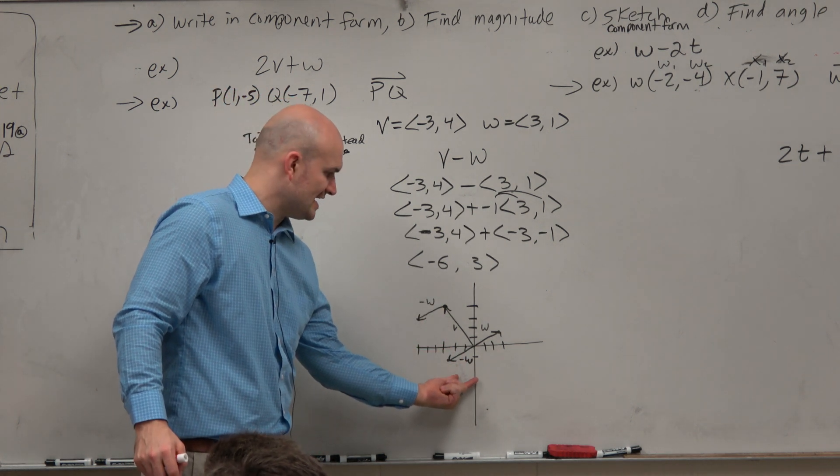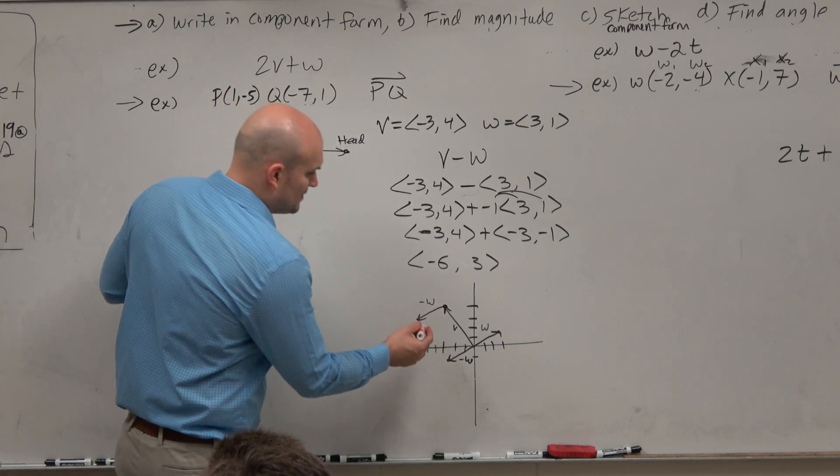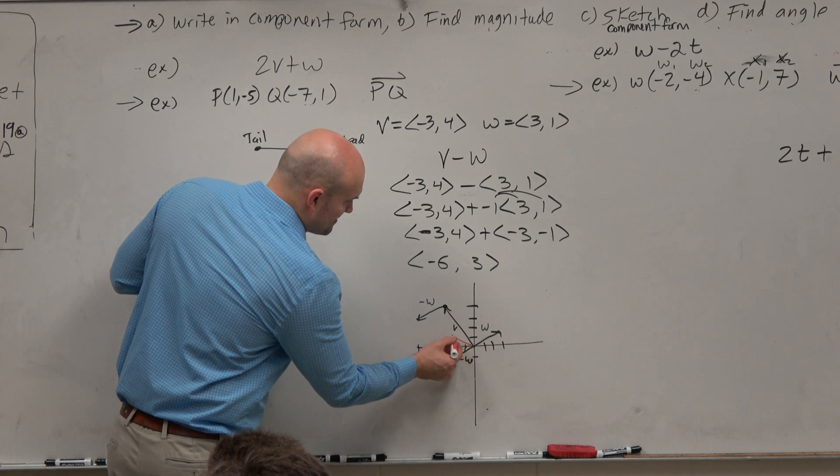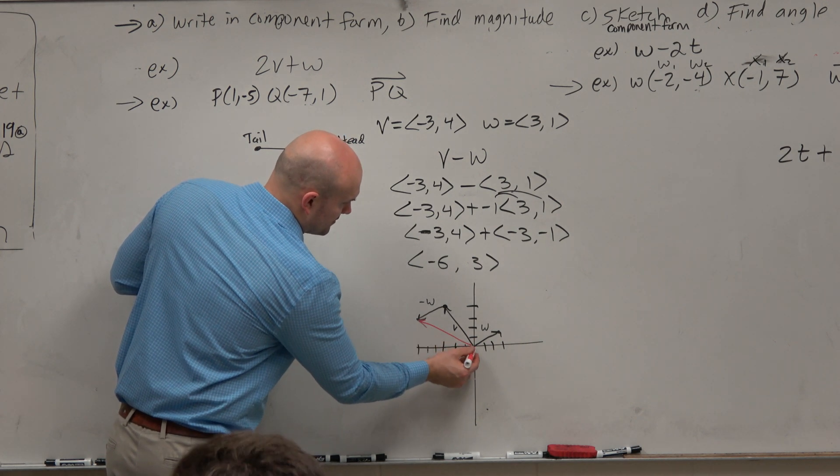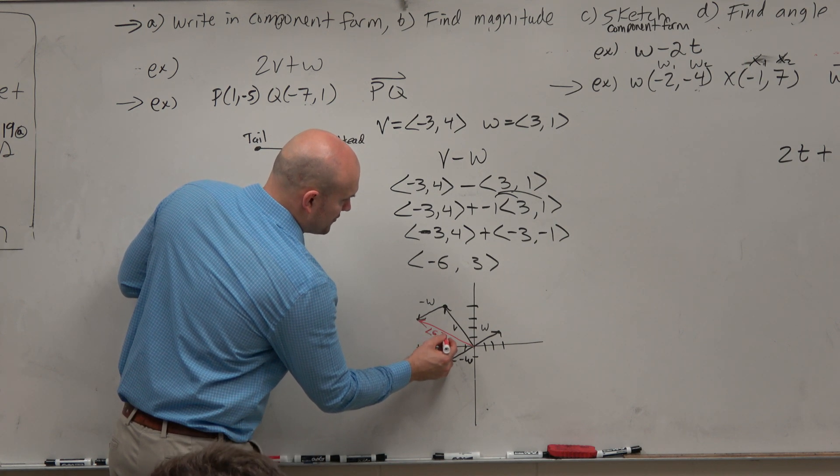So if we take negative w and just go over now three units, and then go down one, do you guys see what I did? I basically took the vector negative w and just put it at the end of v, right? So that represents my resultant vector, which is negative 6, 3.